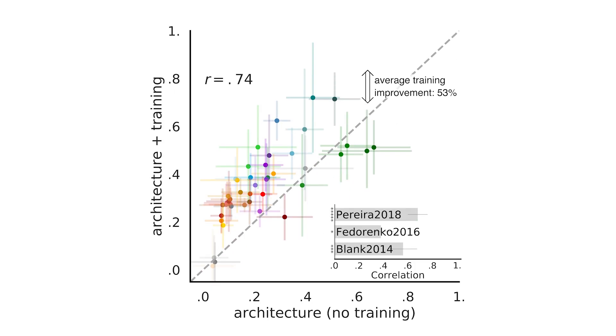Another important direction is to understand why untrained models do so well in capturing human neural responses. This is a surprising finding, with similar findings now observed in vision — something about the information flow through these units is already well suited for capturing how our brain processes language. One possibility is to create minimal pair comparisons of models varying in particular aspects of architecture, to see which architectural motifs are critical for leading to good predictivity of human neural data.